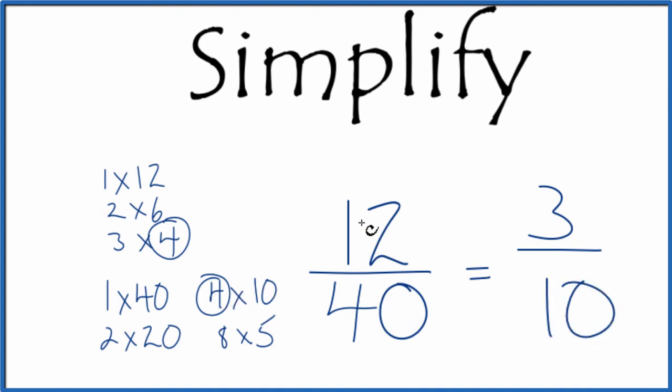So when we simplify or reduce 12 fortieths, we end up with 3 tenths. And these are equivalent fractions. If you divide 12 by 40 or 3 by 10, you're going to get the same number. It's just that we've simplified or reduced 12 fortieths down to 3 tenths.